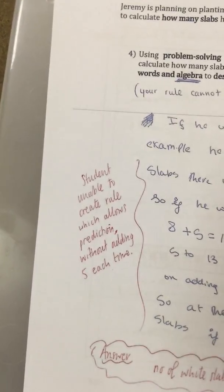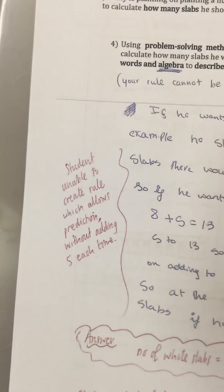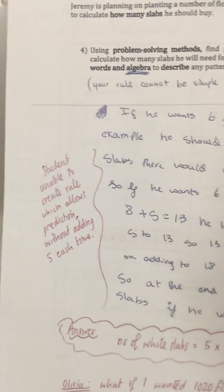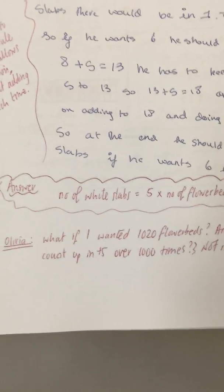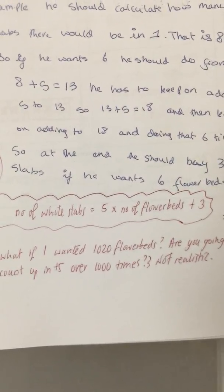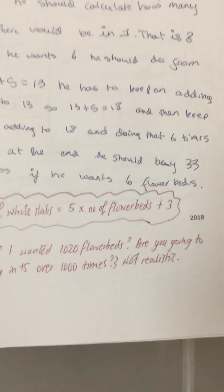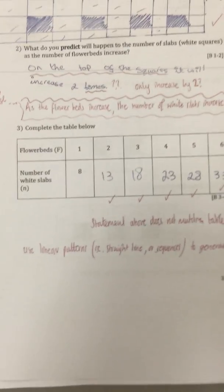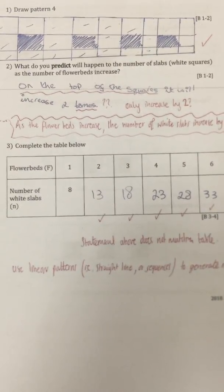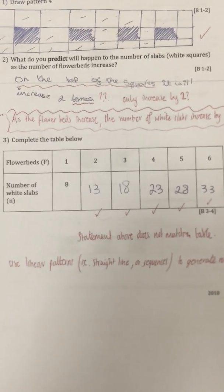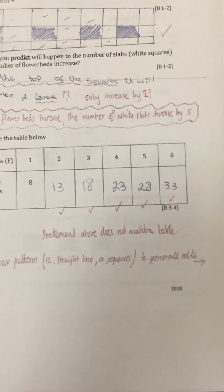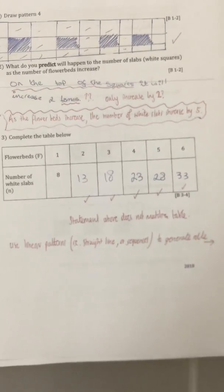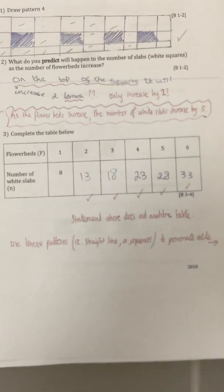This student has been taught linear sequences, so it shouldn't have been a problem. The student was unable to create a rule allowing prediction without adding 5 each time. The correct answer: using the table, the number of white slabs equals 5 times the number of flower beds plus 3. So 5×1=5, plus 3 is 8; 5×2=10, plus 3 is 13; 5×3=15, plus 3 is 18; 5×4=20, plus 3 is 23. That's the algebraic pattern spotting we're looking for.